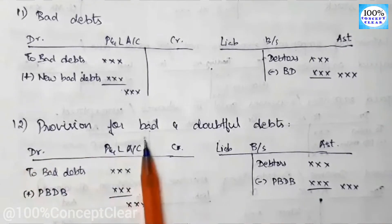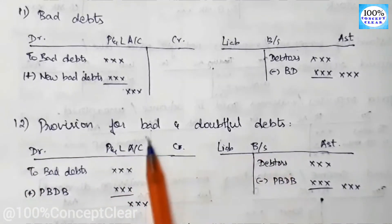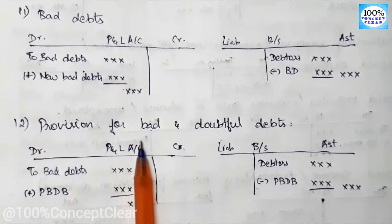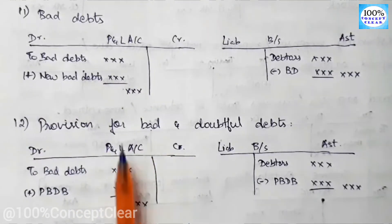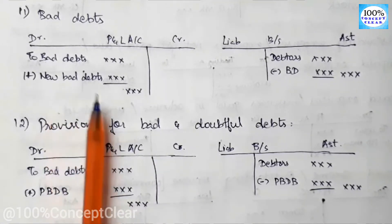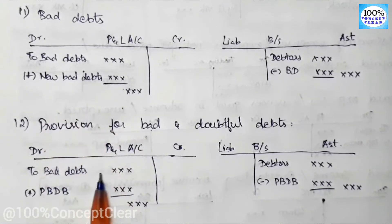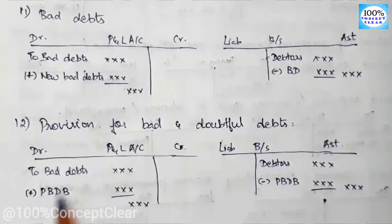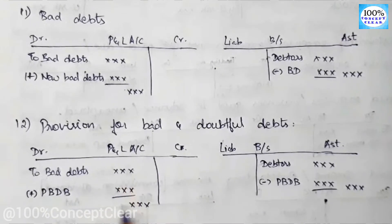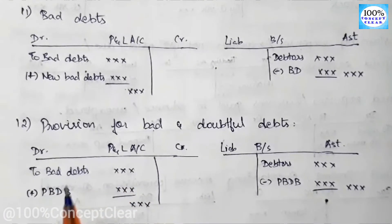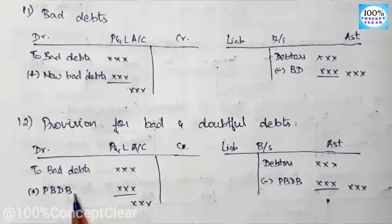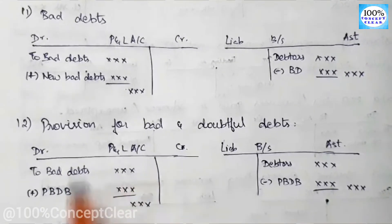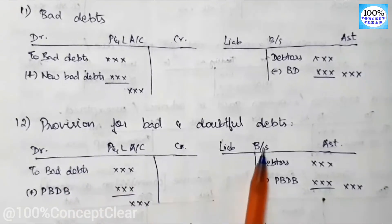The next adjustment is provision for bad and doubtful debts. We provide a provision for bad debts as a precaution. If bad debts already exists in the trial balance as an old item, we also add this new adjustment item to the P&L account as a debit. On the balance sheet, we enter debtors minus the provision for bad debts.